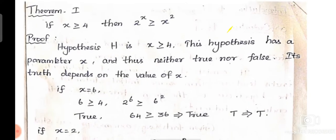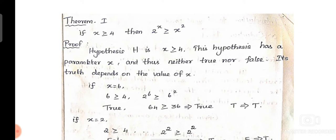Now we are going to see one theorem example for deductive proof. If x ≥ 4, then 2^x ≥ x². In deductive proof we have a left-hand side and right-hand side: if hypothesis H is true then conclusion C is true. Here the hypothesis H is x ≥ 4, and the conclusion is 2^x ≥ x². The truth of the hypothesis depends upon the value of x.